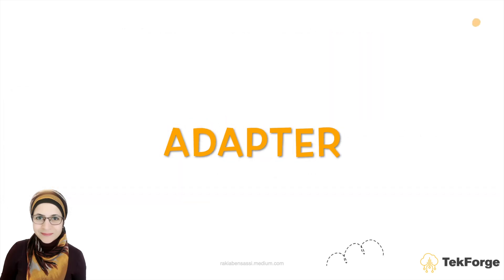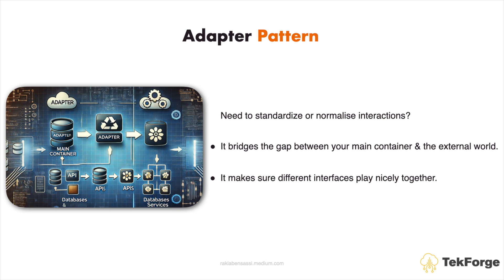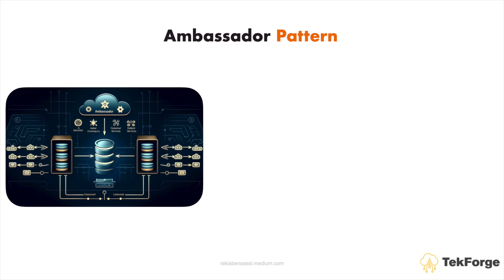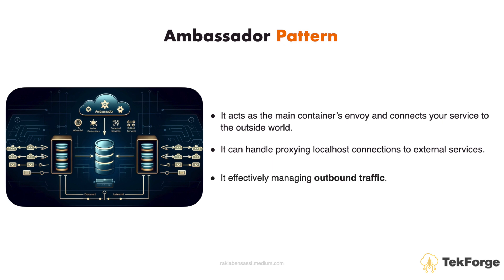Adapter: need to standardize or normalize interactions? The adapter pattern bridges the gap between your main container and the external world, making sure different interfaces play nicely together. Ambassador: acting as the main container's envoy, the Ambassador pattern connects your service to the outside world. It can handle things like proxying localhost connections to external services, effectively managing outbound traffic.